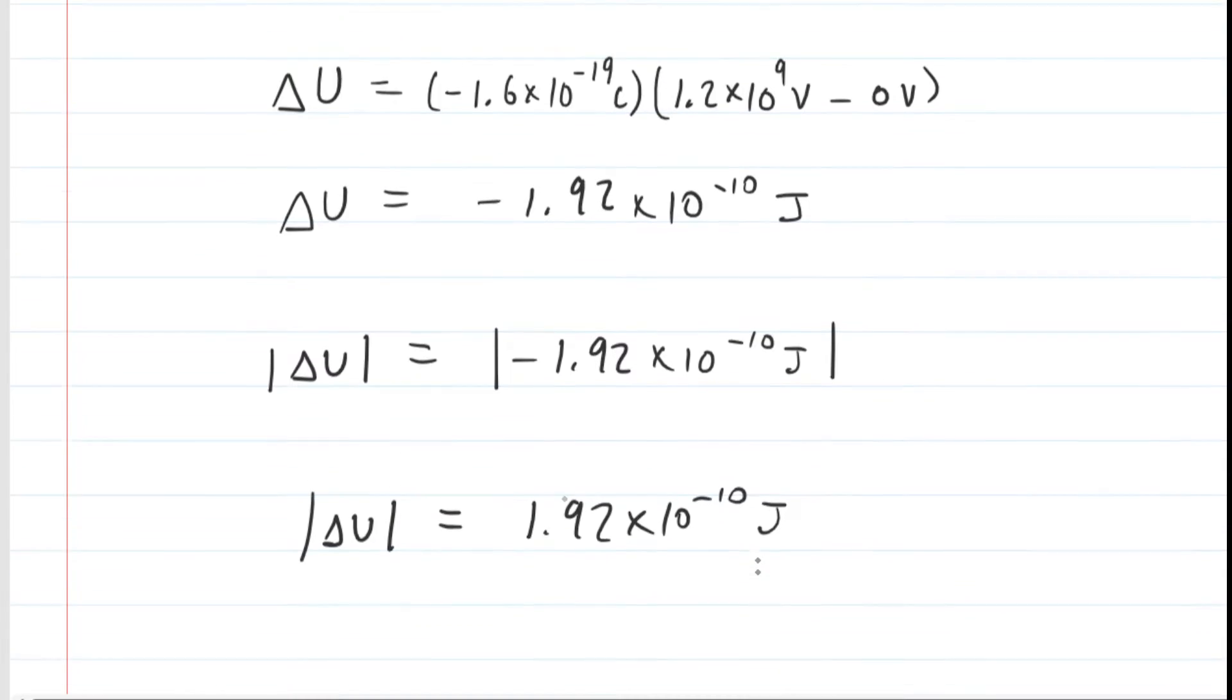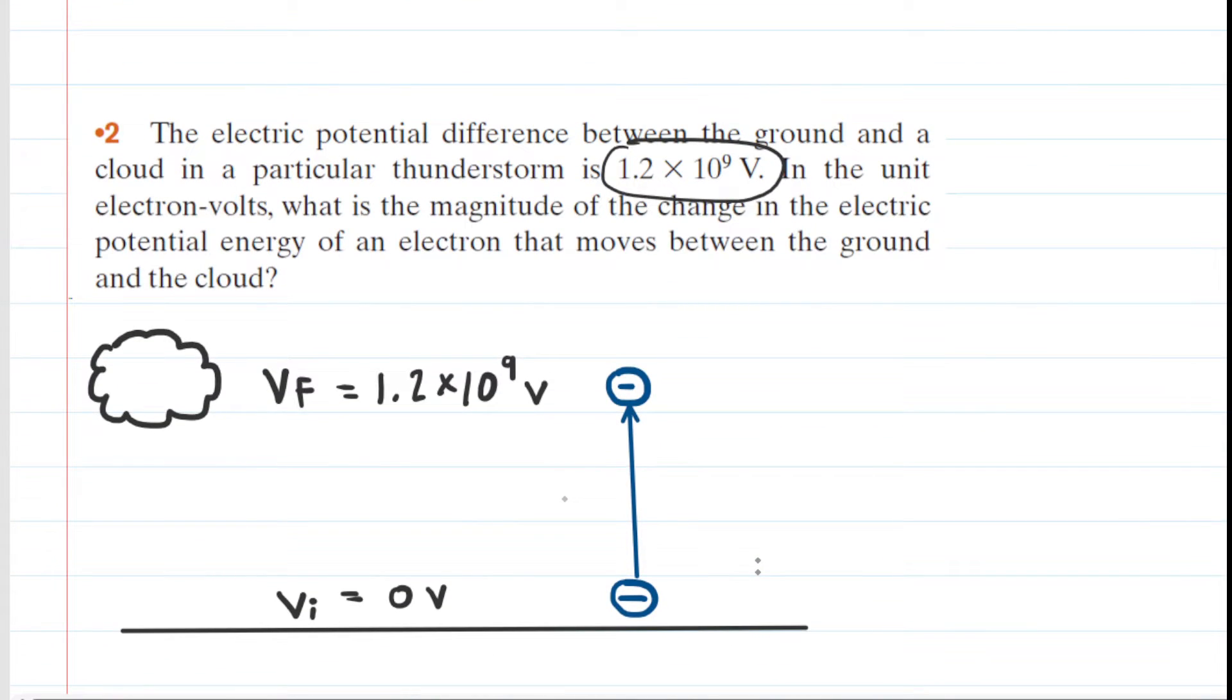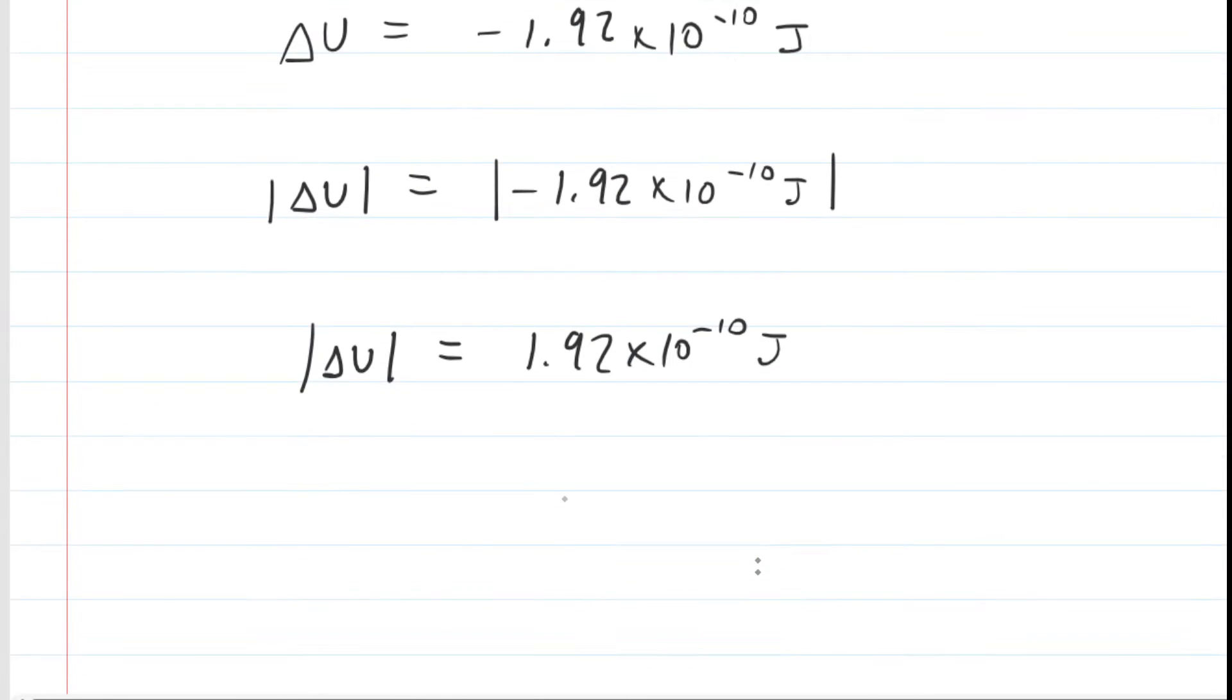The other thing to note is that the question wanted the answer expressed in electron volts. So we have to do a unit conversion here. This is a good opportunity to learn the conversion between joules and electron volts. It turns out that 1 electron volt is equivalent to 1.6 times 10 to the negative 19 joules.